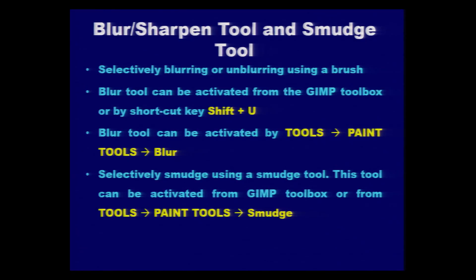Sometimes we may need to blur pixels or sharpen things, so the blur or sharpen tool is available. We also have the smudge tool, but their application needs to be done intelligently. For selectively blurring or unblurring, we make use of the brush tool to blur the area to be edited. The blur tool can be activated from the GIMP toolbox or by using the shortcut key Shift+U. It can also be activated from the tools menu under paint tools, where you can click on the blur option.